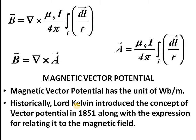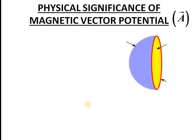This concept was put forward by Lord Kelvin (William Thompson) in 1821, and is now widely used in many areas of electrodynamics. Magnetic vector potential is an important quantity.